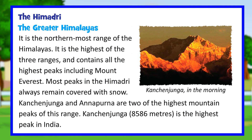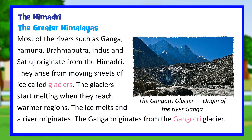The Himadri, or Greater Himalayas, is the northernmost and highest of the three ranges, containing all the highest peaks including Mount Everest. Most peaks in the Himadri always remain covered with snow. Kanchanjunga and Annapurna are two of the highest peaks; Kanchanjunga at 8,586 meters is the highest peak in India. Most major rivers such as the Ganga, Yamuna, Brahmaputra, Indus, and Sutlej originate from the Himadri, arising from moving sheets of ice called glaciers. The Ganga originates from the Gangotri Glacier.